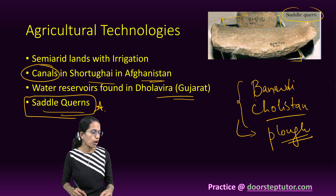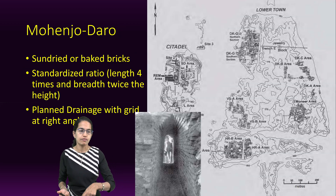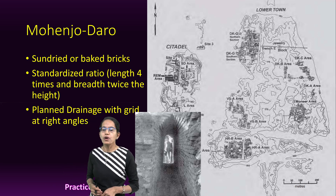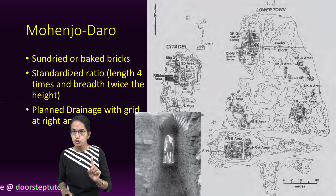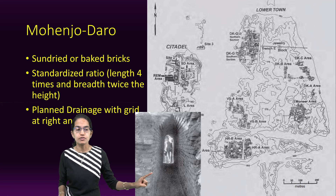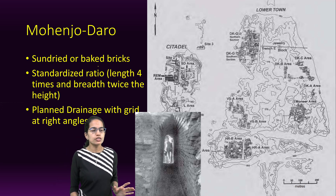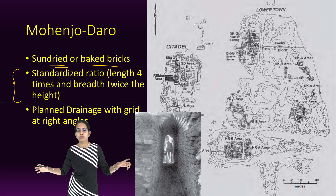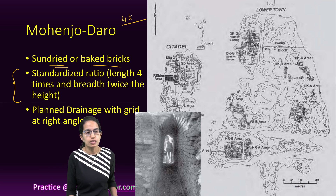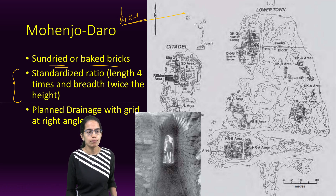Coming to one of the major sites, which is Mohanjodaro - one of the most well-known sites. Note that Harappa was actually the first discovered site. Mohanjodaro used baked bricks or sun-dried bricks, and the bricks were in a standardized ratio: the length was four times the height, and the breadth was two times the height.